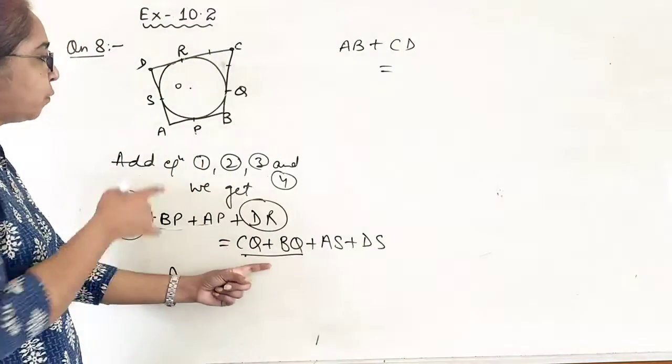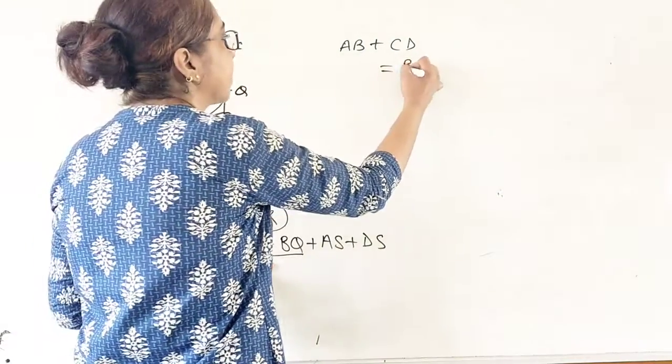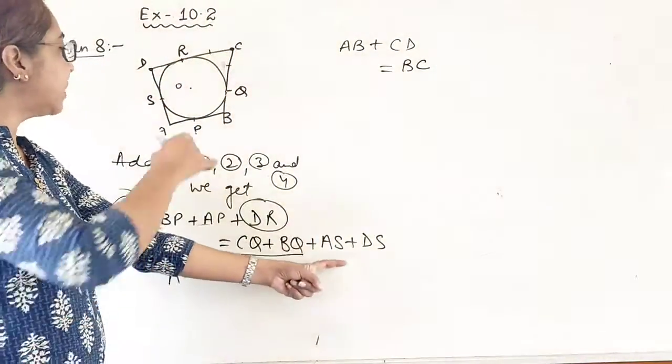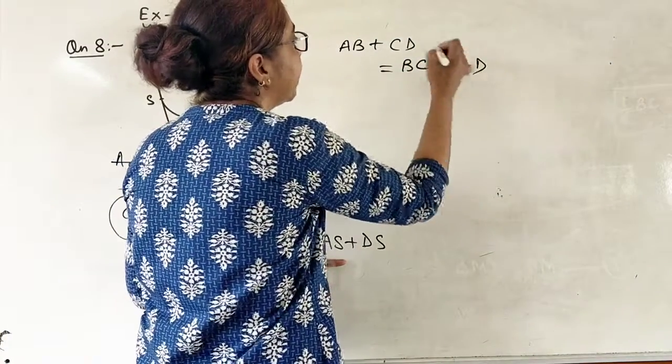And in the same way, can you tell me this CQ plus BQ from the figure? This is BC. And AS plus DS is AD. And that is all.